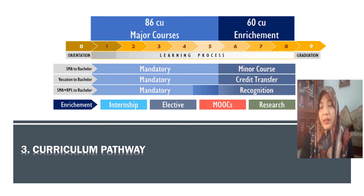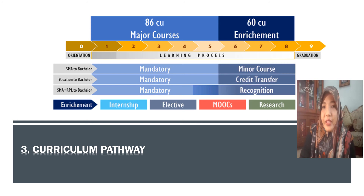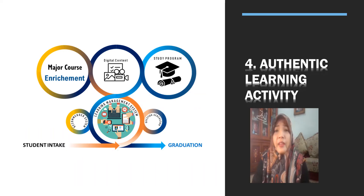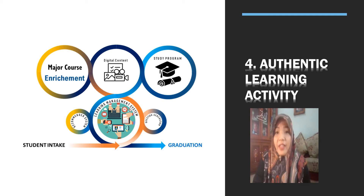Based on mapping Bloom's taxonomy levels, we create a curriculum pathway. As seen in this picture, we have enrichment, internship, elective, MOOC, and research. We have 86 major courses and 60 enrichment courses. Then we have two authentic learning activities that start with students and process all learning activities through to graduation at this institution.